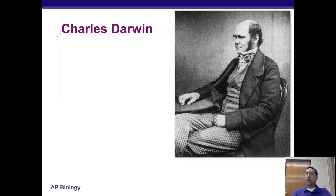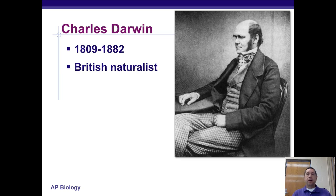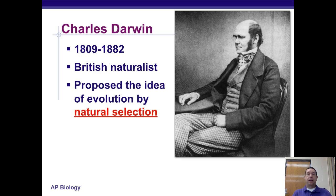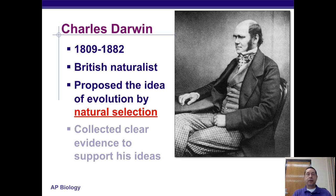Darwin was a naturalist — essentially a biologist by today's standards. He got a job on the HMS Beagle, a ship traveling around the world mapping coastlines of different continents. In the process, he was able to see all kinds of living things. Based on his observations and the work of his contemporaries, he proposed the idea of evolution by means of natural selection.